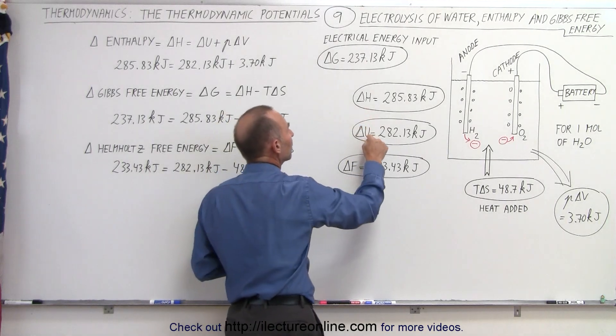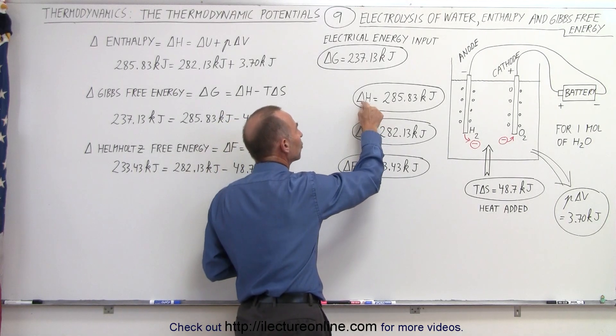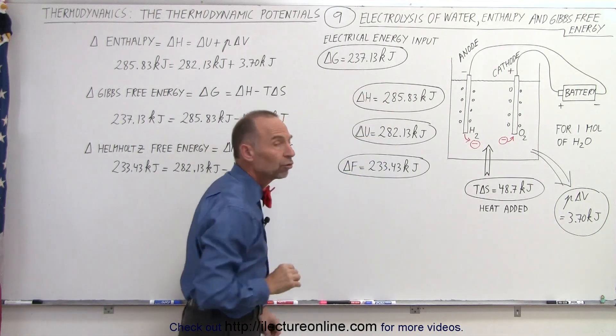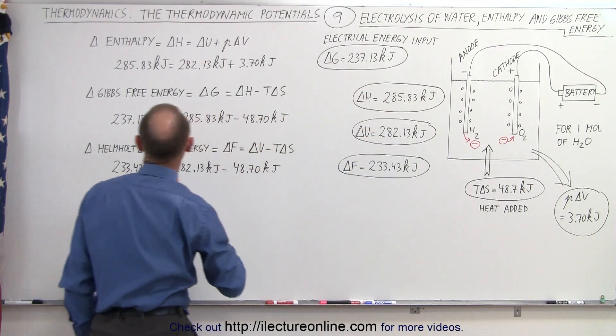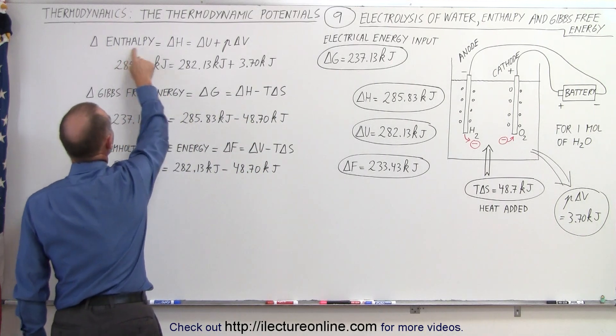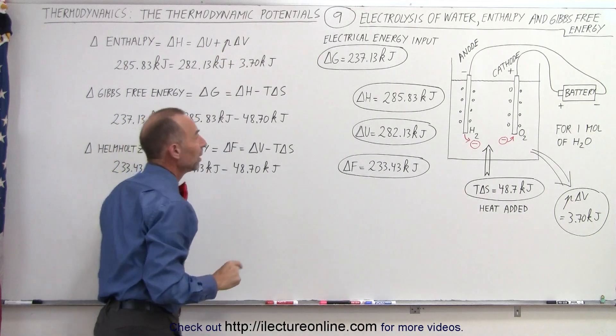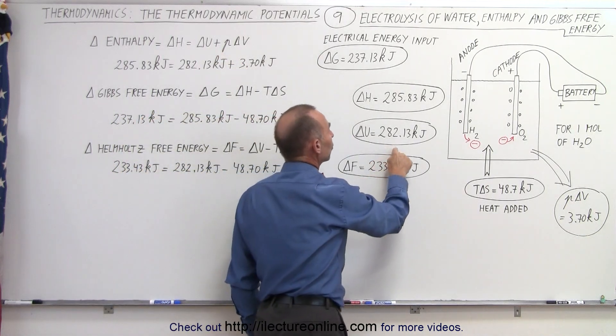Notice we're already familiar with delta U and delta H. Delta H is the enthalpy change, delta U is the change in the internal energy. Now let's go to our equations here. The change in enthalpy, delta H is defined as delta U plus P delta V.